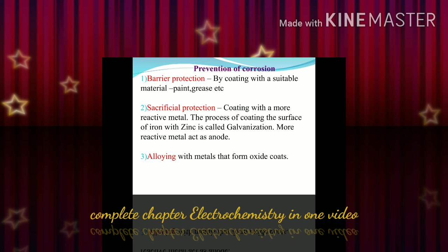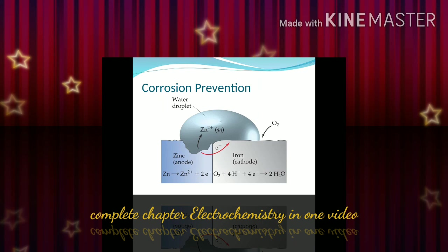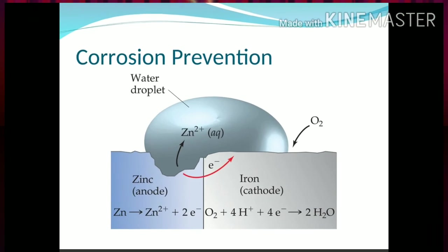Prevention of corrosion: there are different parameters and techniques through which we can protect iron from rusting, such as paint and galvanization by zinc metal. I hope you will like this video — please share and subscribe. It helps you a lot to prepare for your 12th board exam. Thank you.